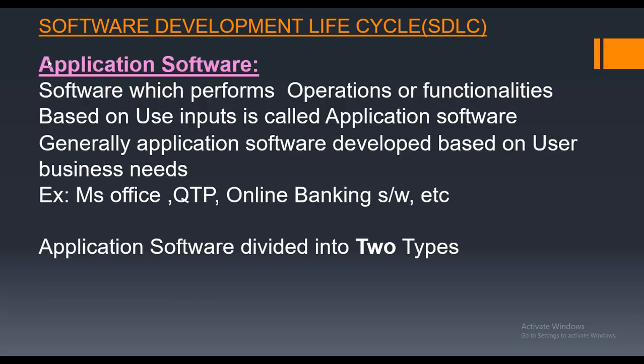Application software is software which works depending on user inputs — it performs work for the user. A banking application is an application software. Facebook, WhatsApp — these are all application software. Unlike system software, application software literally works for the human user.